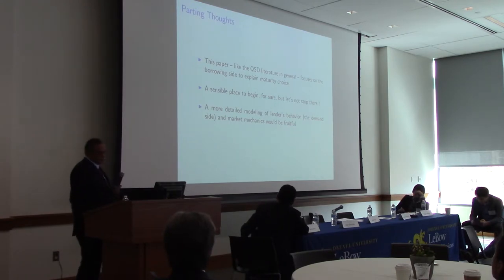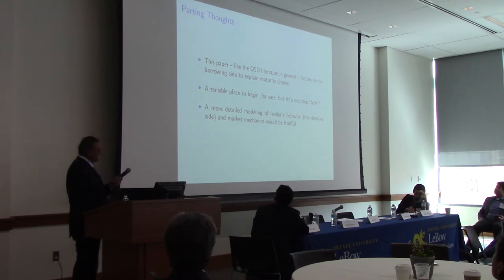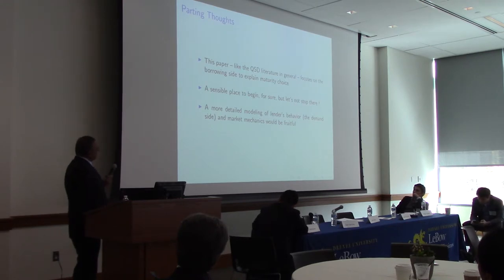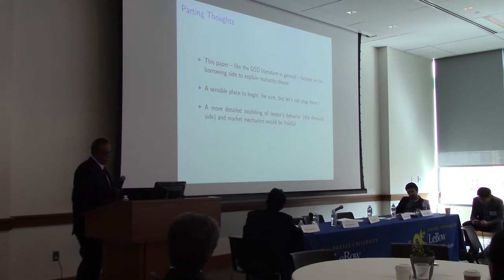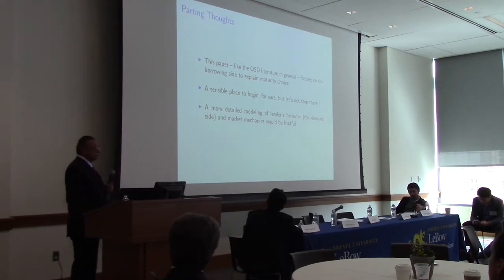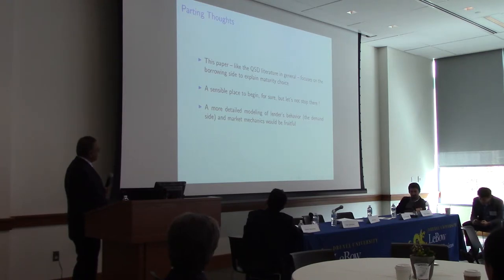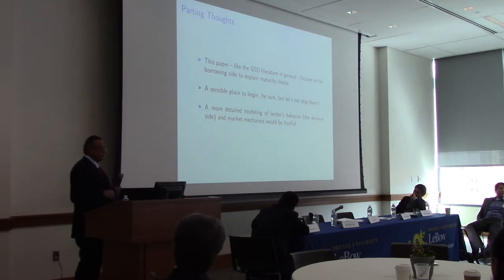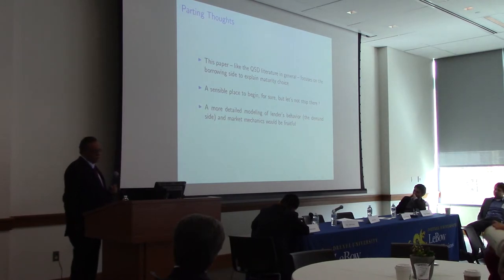In summary, this is a very nice paper — quite innovative in many dimensions. To really get a good grip on maturity choice by sovereigns including the US, you have to think carefully about the cash management problem and exactly how treasury departments of various countries are trying to solve it. The authors focus on the borrowing side to explain maturity choice, which is a fine place to start. But I would like the authors to think more about the lending side and a more detailed modeling of lender behavior and market mechanics.